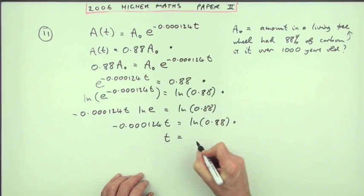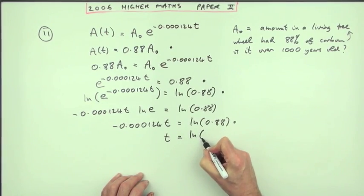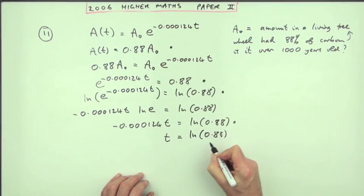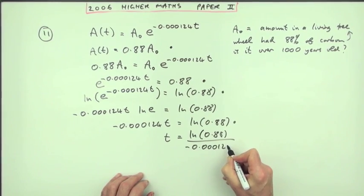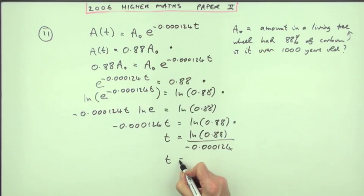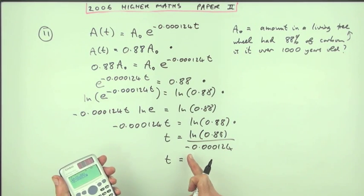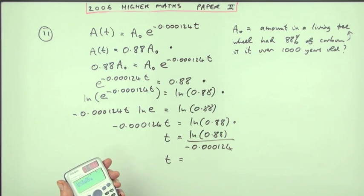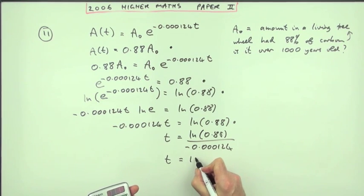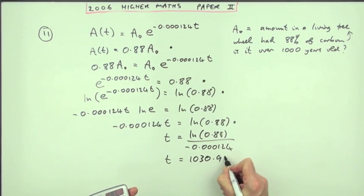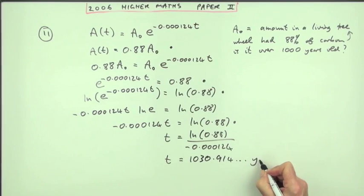And then it's just t is going to be ln of 0.88 divided by negative 0.000124. Press the buttons, not forgetting to use that change of sign and not a subtract, and you get 1030.914 and so on and that's in years.